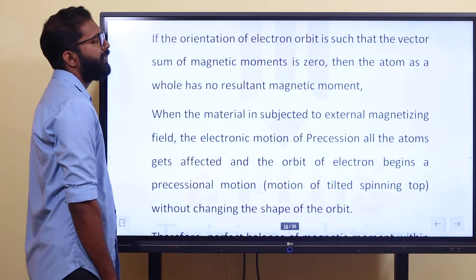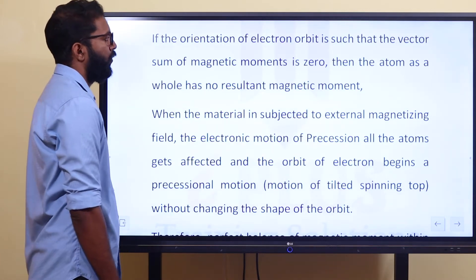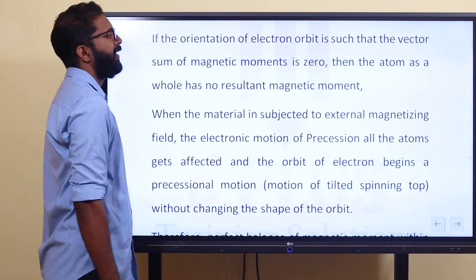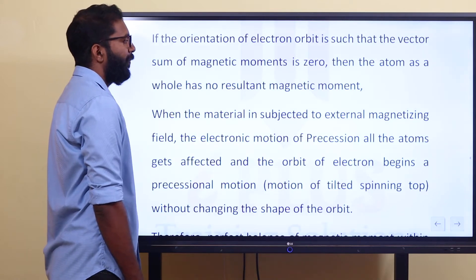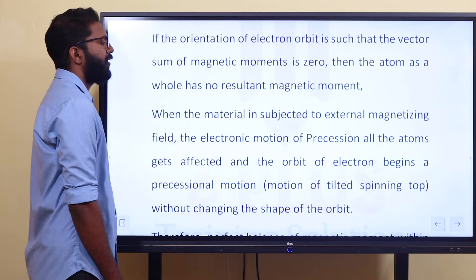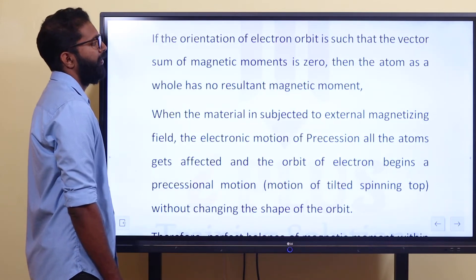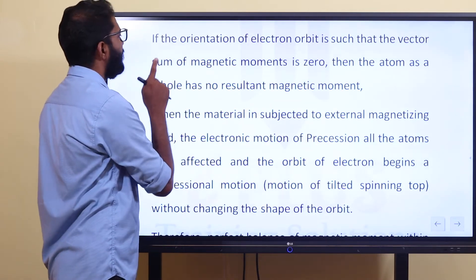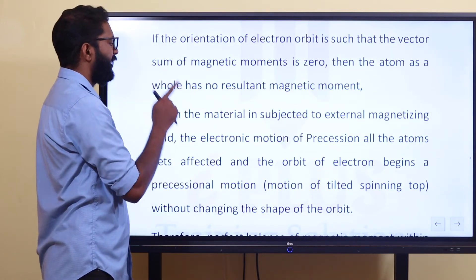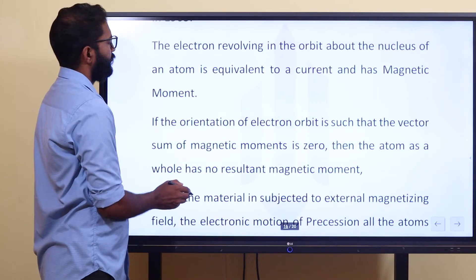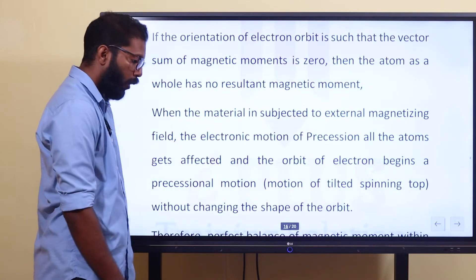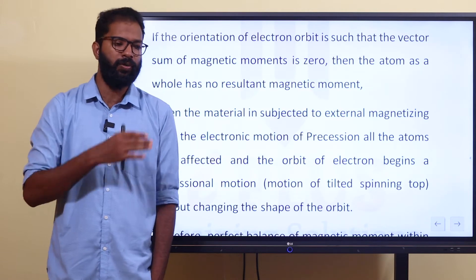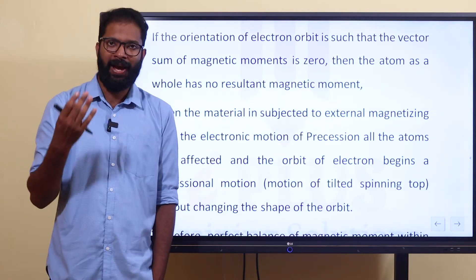If the orientation of the electron orbit is such that the vector sum of the magnetic moments is zero, then the atom has no resultant magnetic moment. That is why we call it the net magnetic moment being zero. The vector sum of the magnetic moment is zero.